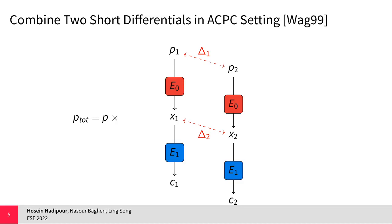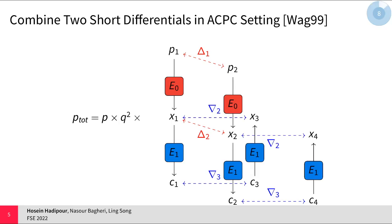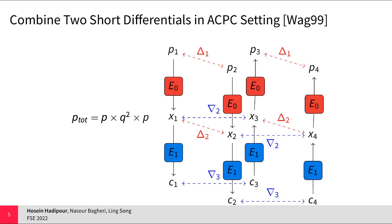In boomerang cryptanalysis, it is assumed that the attacker has access to both encryption and decryption oracles. In boomerang distinguishers, we first provide a pair of plaintexts with difference delta and ask for the encryption of these plaintexts to derive the corresponding ciphertexts c1 and c2. The differential transition delta1 to delta2 happens with probability p. Next, we apply the same difference to c1 and c2 to generate two new ciphertexts c3 and c4, and then query the decryption of c3 and c4 to derive the corresponding plaintexts p3 and p4. We then check whether the difference between p3 and p4 is delta1 or not.